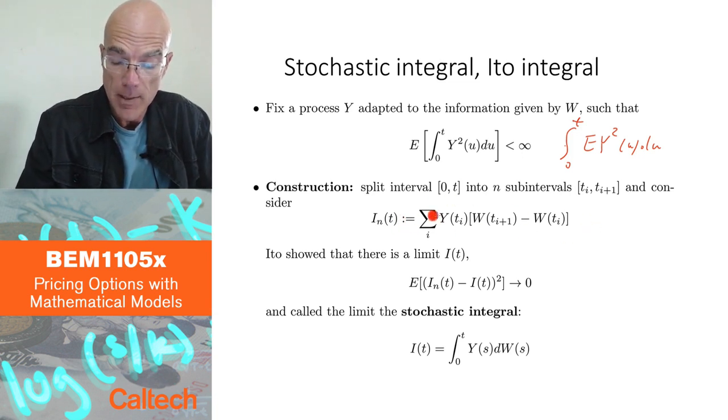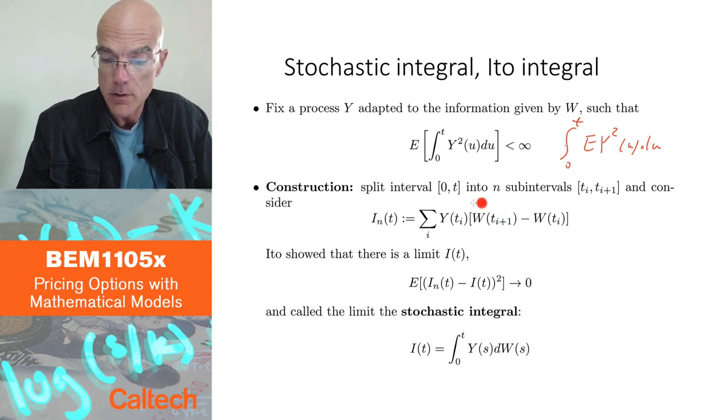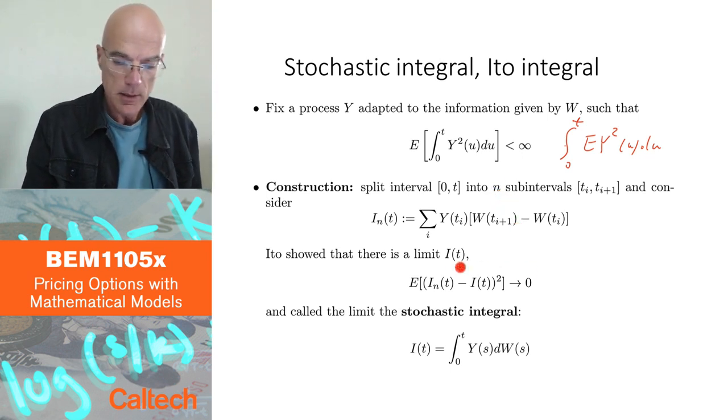That's I N. And this is a natural, this is the same definition that is used to construct Riemann integrals. So it's a natural way to define an integral in a discretized way. What Ito did, he showed, when you take the limit, when delta T goes to 0, meaning N goes to infinity, that the limit exists in this sense.